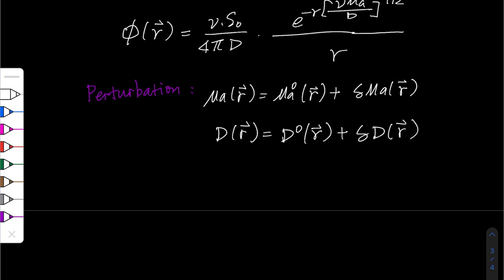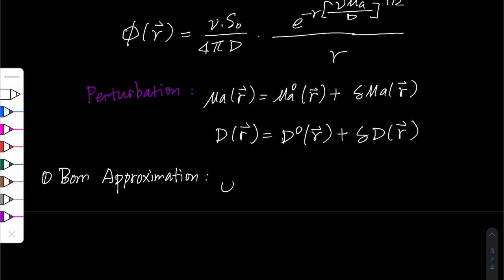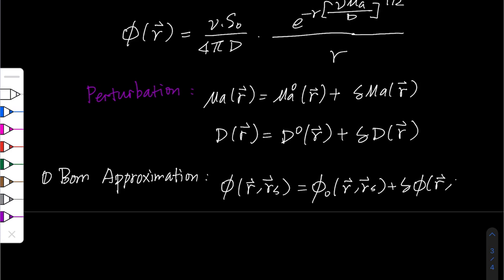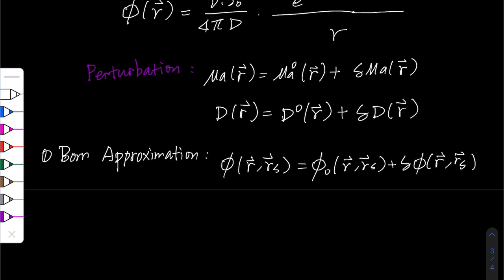There are two ways to express the change in photon fluence phi. The first one is called the Born approximation, which means phi equals the initial value phi_0 plus the perturbation delta phi. This is a very straightforward way of expressing the change in phi, essentially the same linear approach as for the perturbation of optical properties.